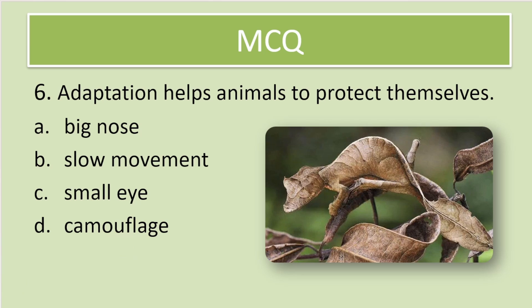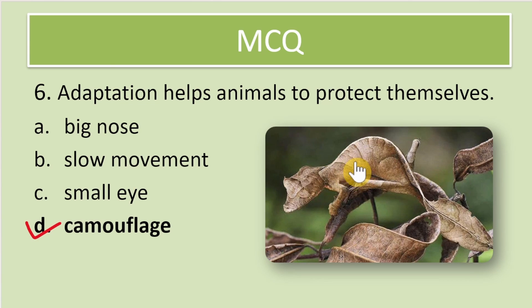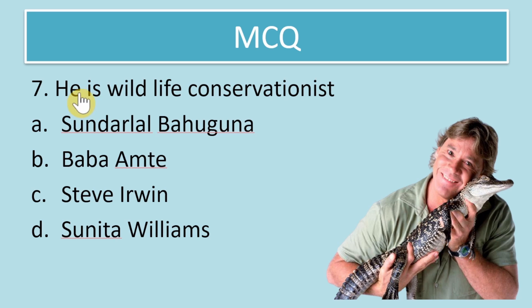Next question: which adaptation helps animals to protect themselves — big nose, slow movement, small eye, or camouflage? The answer is camouflage. As you can see here, this is a sort of chameleon, and you can see how well it has camouflaged with the surrounding. You feel as if it is a dry leaf. This is what we call camouflage.